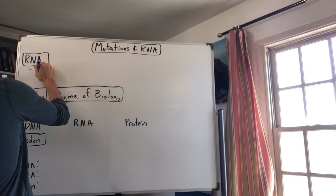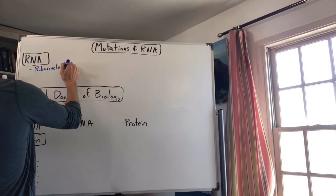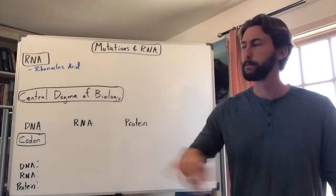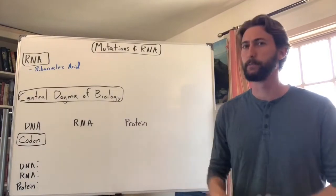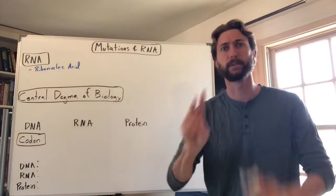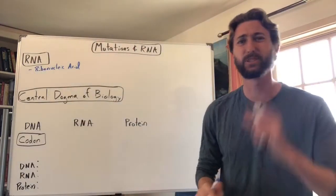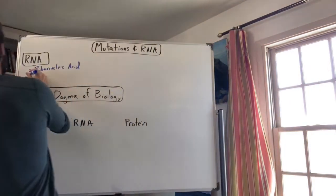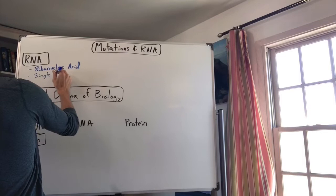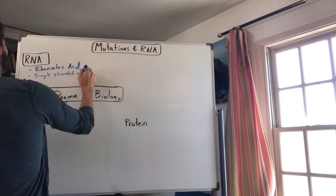The full name is ribonucleic acid — not deoxyribonucleic acid, but ribonucleic acid. If you remember, DNA has that double helix shape because it's a double strand. RNA only has one strand — it's a single-stranded molecule.